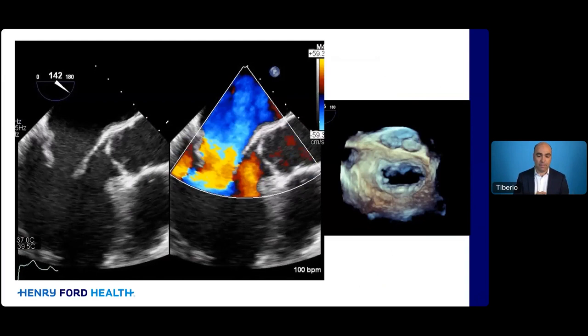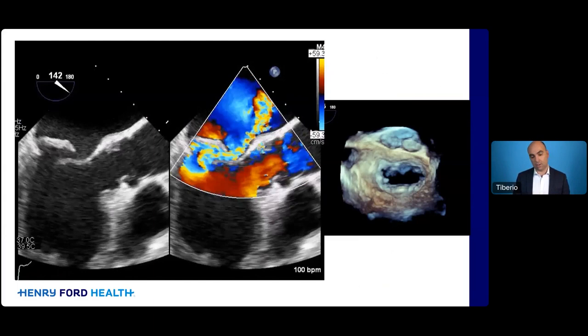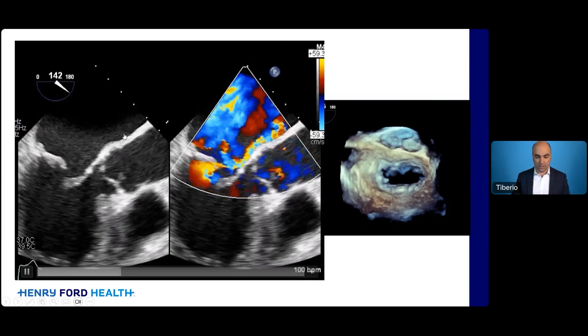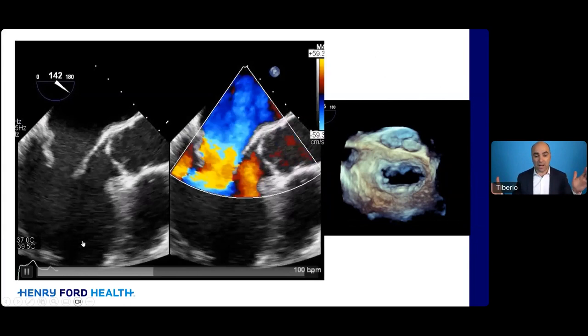Here is an example of an image from a transesophageal echocardiogram: the aortic valve opening and closing normally, and the mitral valve opening fine but with one leaflet prolapsing backwards when it closes — that's the primary mitral regurgitation I described. You would not usually get this quality of image from a transthoracic echo. From this image, a surgeon and an interventional cardiologist can discuss treatment options in great detail.